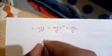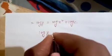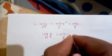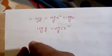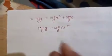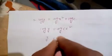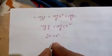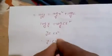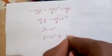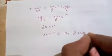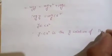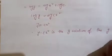log y = log x² + log c, which implies log y = log(c·x²). Therefore y = cx², which is the general solution of the given differential equation.